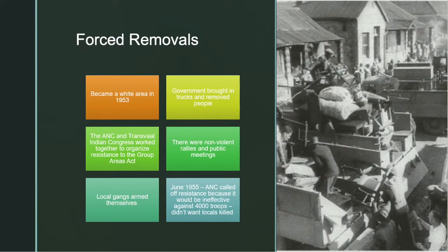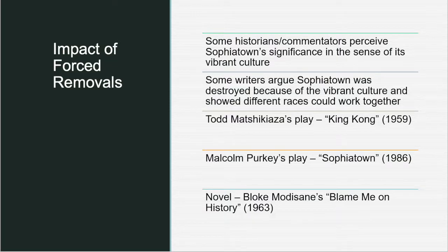Forced removals: Sofiatown became a white area in 1953. The government brought in trucks and removed people. The ANC and Transvaal Indian Congress worked together to organize resistance to the Group Areas Act. There were non-violent rallies and public meetings, and local gangs armed themselves. But in June 1955, the ANC called off resistance because it would be ineffective against 4,000 troops. Some historians perceive Sofiatown's significance in the sense of its vibrant culture, and some writers argue it was destroyed because it showed that different races could work together.